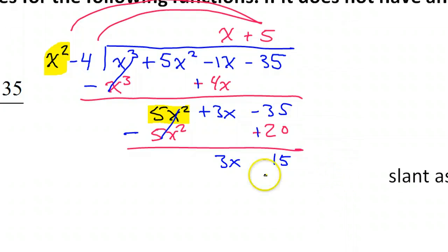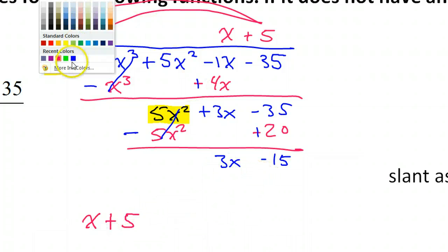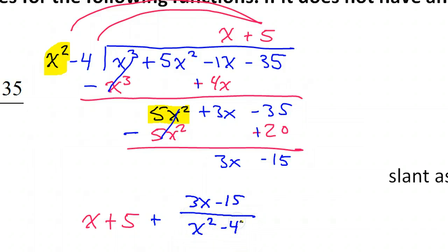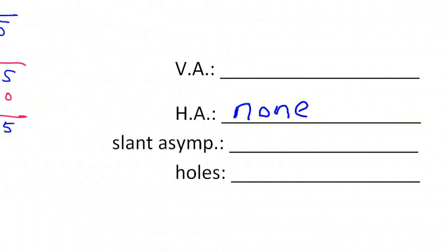The quotient is going to be x plus five. The remainder is plus three x minus fifteen over x squared minus four. This is the quotient from dividing. It's only the quotient — not including the remainder — that gives us the slant asymptote. So the slant asymptote will be y equals x plus five.